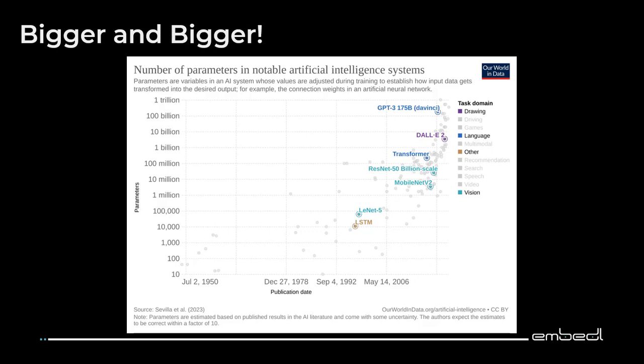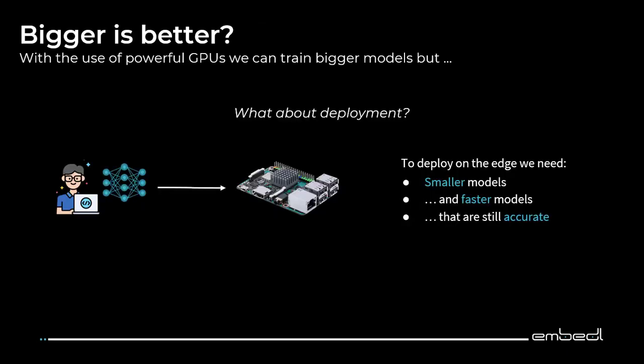This challenge poses significant issues on one hand when we look at the environmental impact of deep learning, but also when we look at deployment — especially deployment on the edge. On the edge we need small models; we need fast models that are still accurate. And this is quite contradicting to the current trend of deep learning getting larger and larger. So we need to make our models smaller in some way.